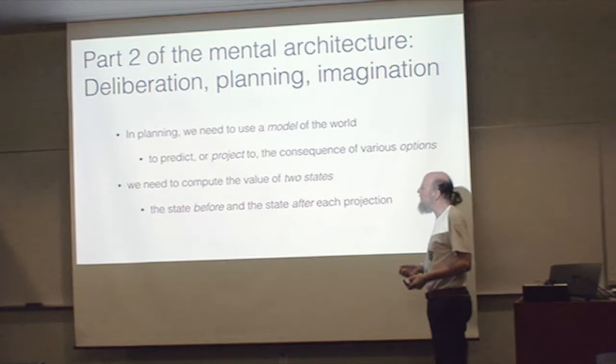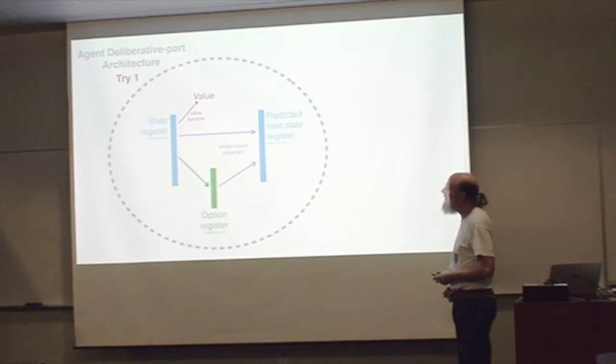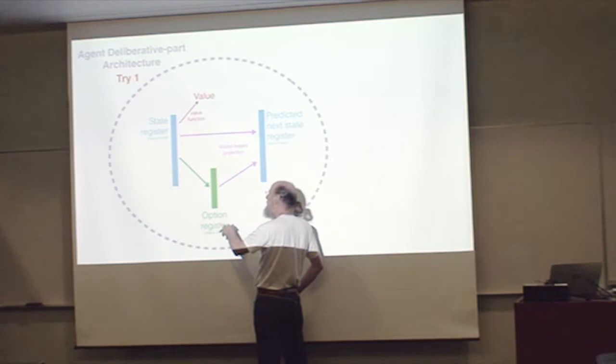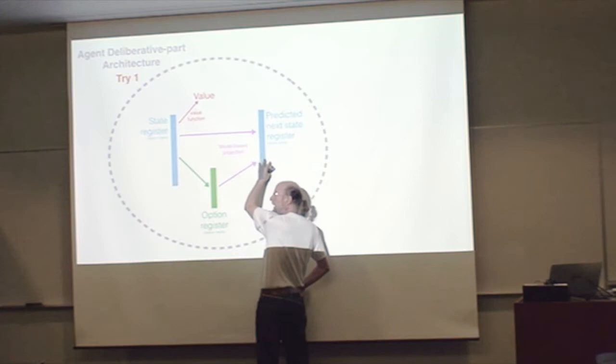For any kind of planning, you need to compute the value of two states: the state before and the state after in the projection. Here's the sort of normal way of thinking about planning. You have a state that you're thinking about - maybe that's the state register. Based on that, you might consider an option that you might take, a way you might behave for a while. Then, given where you are and what you propose to do, use your model to project, to guess where you're going to end up.